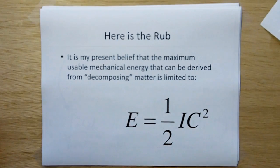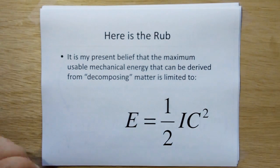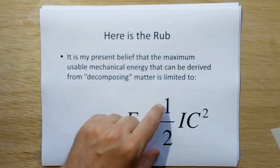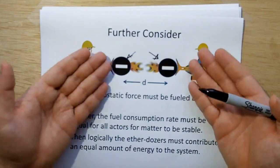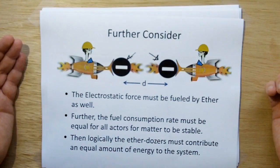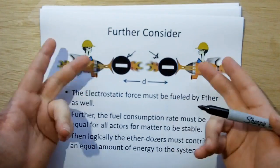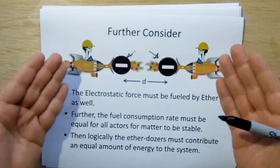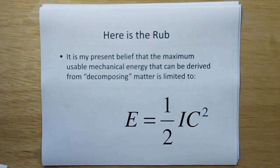Here's the rub. It is my present belief that mechanical energy, the only mechanical energy you can derive from decomposing matter is one-half IC. Why? Well, in order to make the system go out of balance, you've got to eliminate one force or the other. And since they're equal and opposite, if you eliminate one, you're going to get the benefit of one, but then you've got to remove the other. So you're not going to get the benefit of both energies which make up matter. That's my theory right now, anyway.